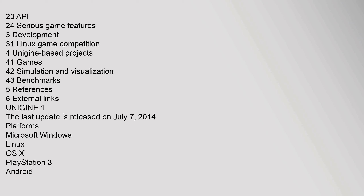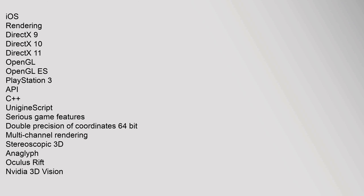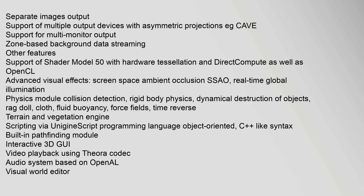Unigine 1: The last update was released on July 7, 2014. Platforms supported include Microsoft Windows, Linux, OS X, PlayStation 3, Android, and iOS. Rendering support covers DirectX 9, DirectX 10, DirectX 11, OpenGL, and OpenGL ES. The API uses C++ and UnigineScript. Serious game features include double precision of coordinates (64-bit), multi-channel rendering, stereoscopic 3D, anaglyph, Oculus Rift, and NVIDIA 3D Vision.